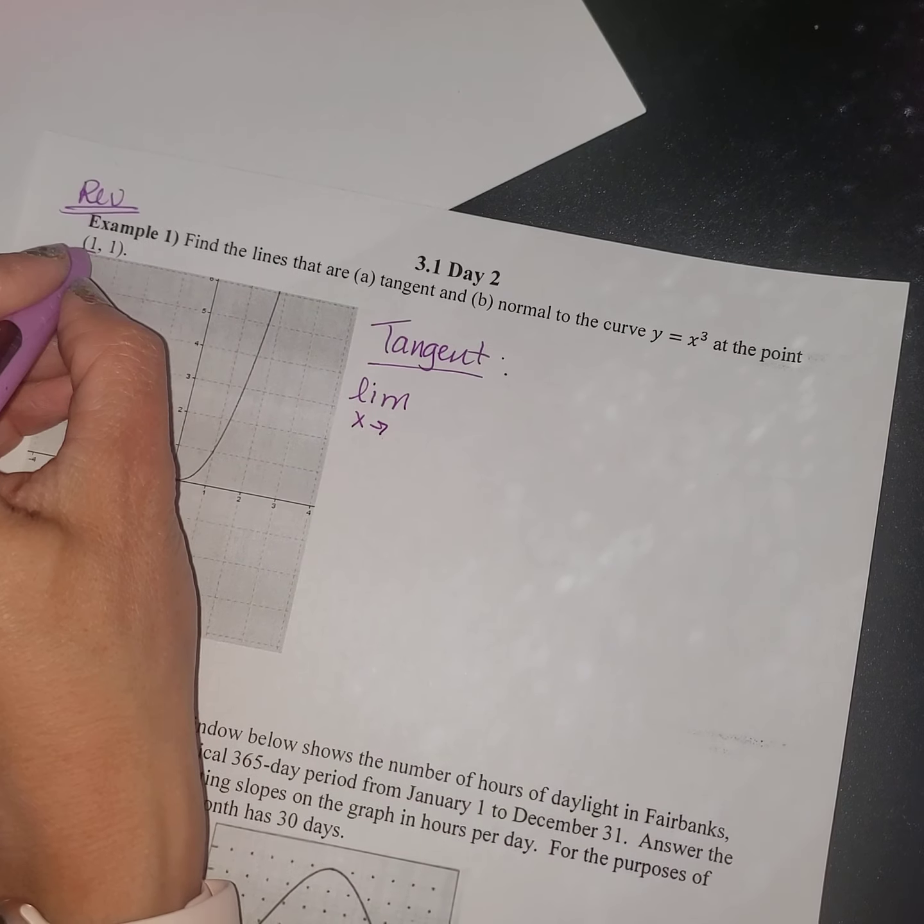And let's use the new method. So it's going to be the limit as x approaches, what's the x value? The x value of the point is 1, so we're approaching 1. We need the function, which is x cubed minus f of a. So we need to plug in the 1 for x, so that would be 1 cubed all over x minus a. The a value is 1.